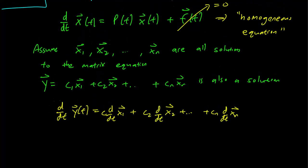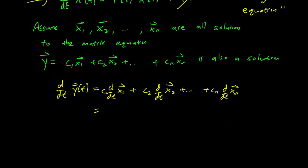But we know that each of the x1, x2 to xn satisfy this equation, the one on top. So we can just replace everything with P(t) times each xi and collect terms again.